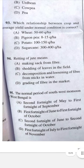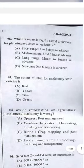Question 95: The normal period of the southern monsoon in West Bengal is the first fortnight of June to the first fortnight of October.